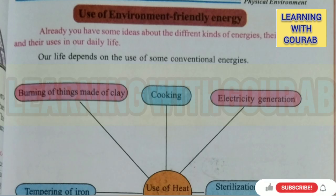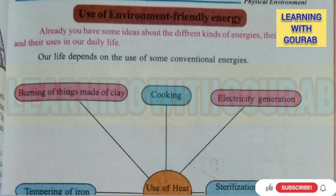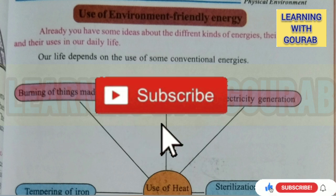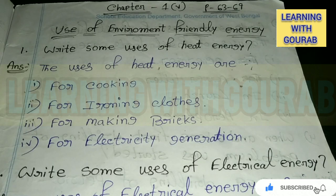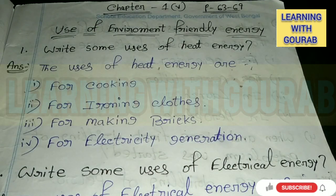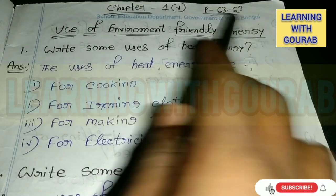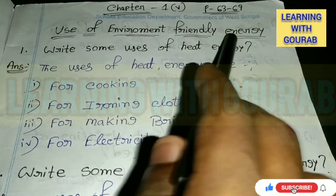Hello friends, welcome to my YouTube channel Learning with Gaurav. In this video I will discuss West Bengal English medium Class 7 Science Chapter 1.5: Use of Environment Friendly Energy. Watch the full video. If anyone is watching my channel for the first time, subscribe and press the bell icon for further notifications. Class 7 Science Chapter 1.5, page number 63 to 69: Use of Environment Friendly Energy.